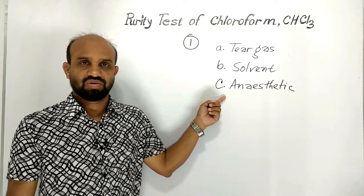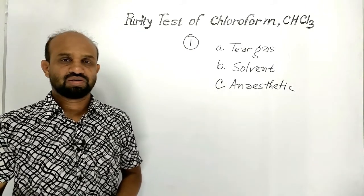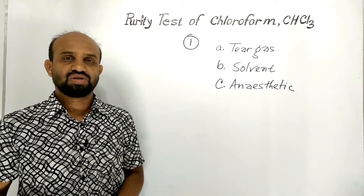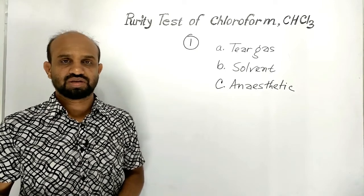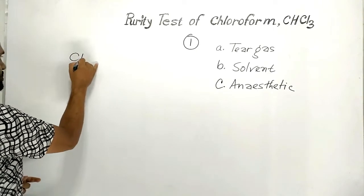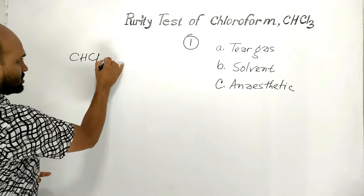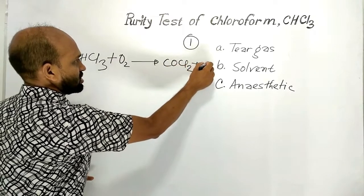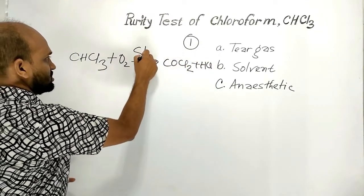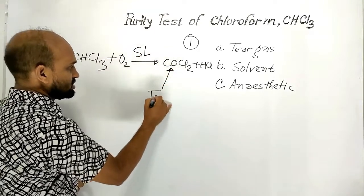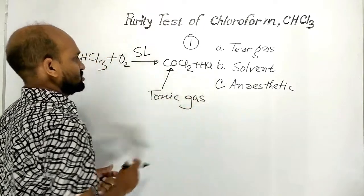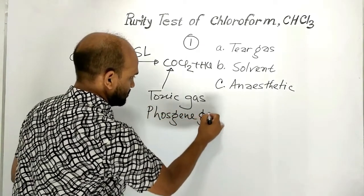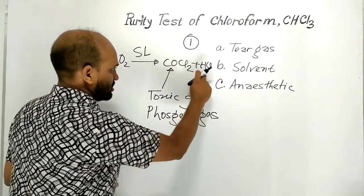So the pure form of chloroform is important — that is number one. Number two: in chloroform, the toxic gas carbonyl chloride, which is known as phosgene gas, is produced inside the chloroform. Chloroform is oxidized to carbonyl chloride and HCl in the presence of sunlight. This toxic gas is known as phosgene gas and hydrogen chloride gas.